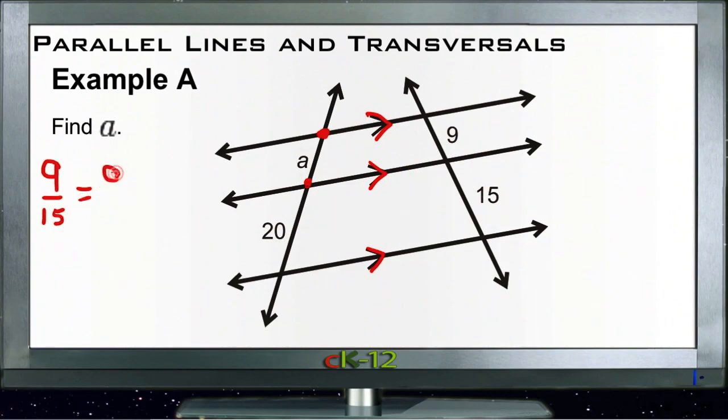The way a is to 20. And the 9 and 15 reduces, divides by 3 it looks like, so that would be 3 to 5 and a to 20. It makes our math a little easier. Then we can just cross multiply.